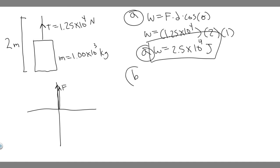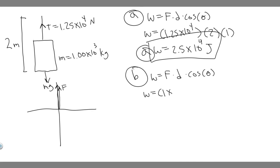Now let's do Part B, which is a little bit different. We're still solving work equals force times distance times the cosine of theta. The force in this case is the force of gravity, which is just mg — mass times the gravitational constant. So the force is 1 times 10 to the 3 kilograms multiplied by 9.8. The distance is still 2 meters in both cases, so we multiply by 2.